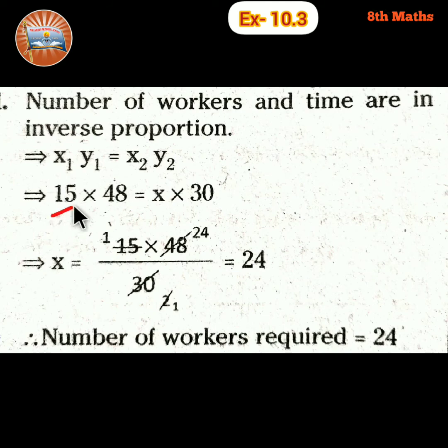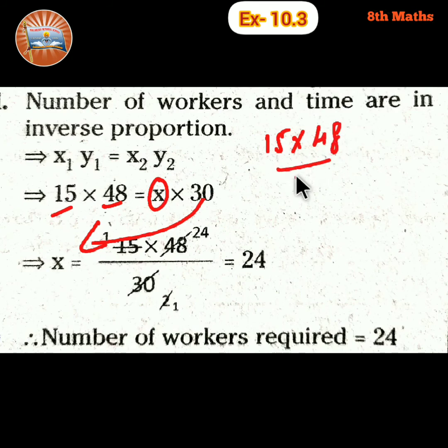So 15 times 48 is equal to x times 30. So bring x here. Transpose this side, this side 30. So 15 times 48 by 30, this x is equal to.